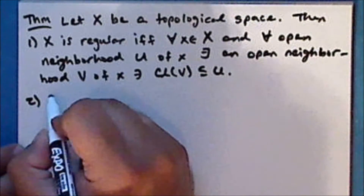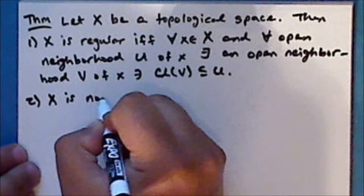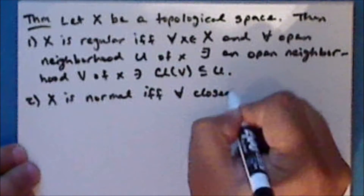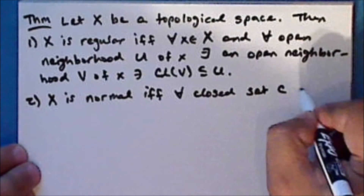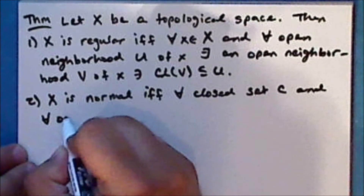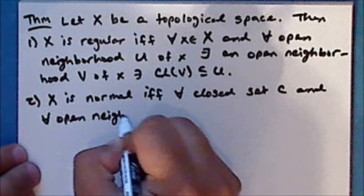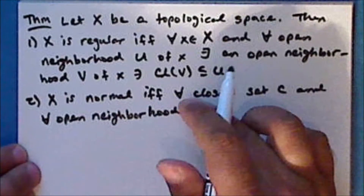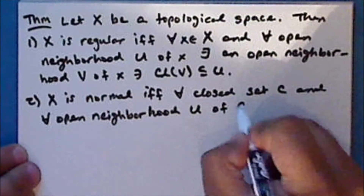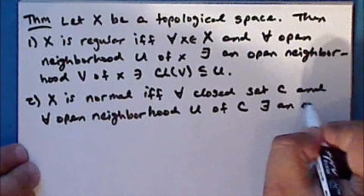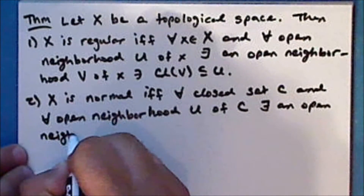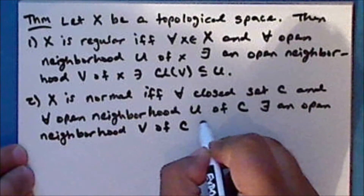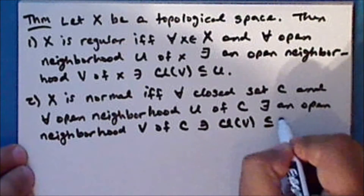such that the closure of V is contained in the set U. And the space is normal if and only if for every closed set C and for every open neighborhood U of C, there exists an open neighborhood V of C such that the closure of V is contained in the set U.